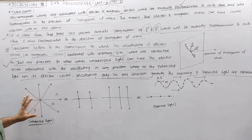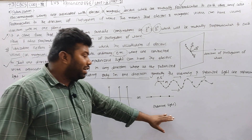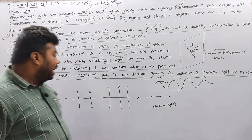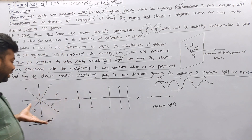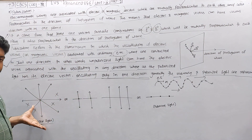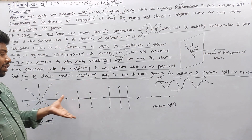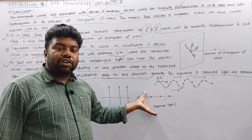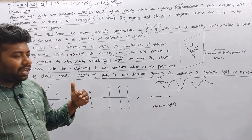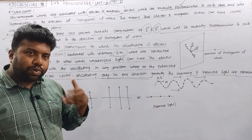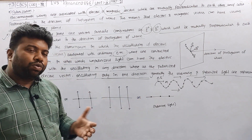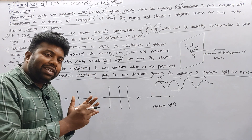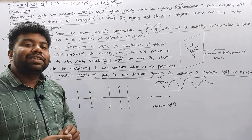Unpolarized light versus polarized light. We represent the unpolarized light in one form, and we select the polarization process to convert the unpolarized light to polarized light.